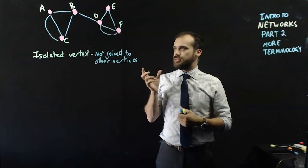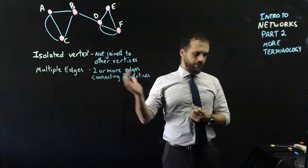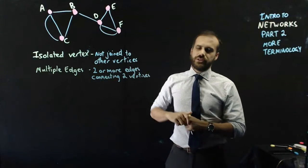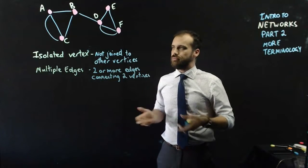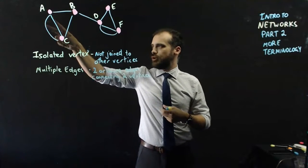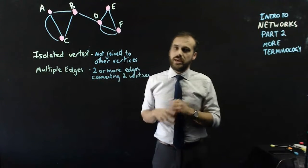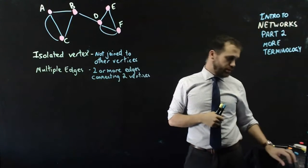Now we come to our next little bit of terminology: multiple edges. Two or more edges connecting two vertices. You can see two examples here of multiple edges. There are two roads between towns A and C, and there are two roads between towns D and F.